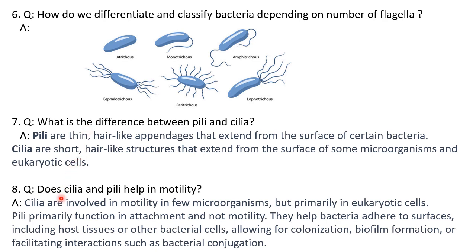Do cilia and pili help in motility? Cilia are involved in motility of a few microorganisms, but primarily cilia that help in motility are found in eukaryotic cells. Pili, on the other hand, primarily function in attachment, not motility. Pili help bacteria adhere to surfaces including host tissue or other bacterial cells, which helps in colonization, biofilm formation, and other interactions. So cilia can aid motility in a few organisms, but pili have nothing to do with motility.